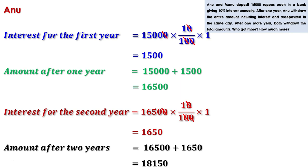In many schemes, interest for each year is added to the current amount when calculating interest for the next year, without actual withdrawal and reinvestment. Interest calculated this way is called compound interest. Interest calculated only on the original investment each year is called simple interest. In compound interest, you get interest on the previous year's interest as well. That is why the second bank gives more returns.